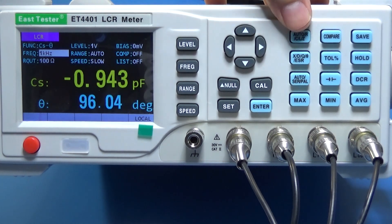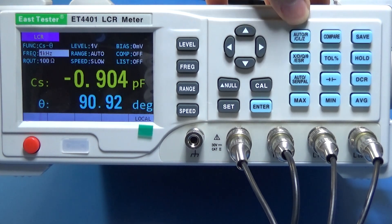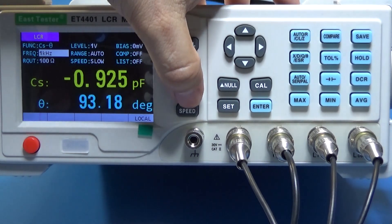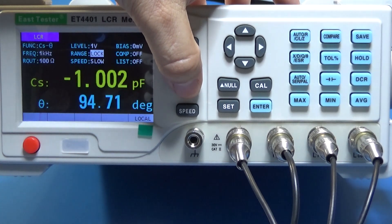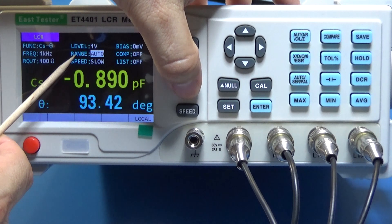If we come out from auto, we can select the range or just punching the range will keep us out of the auto. Auto is good because it will select between the capacitor, the inductor, the resistor and the impedance.